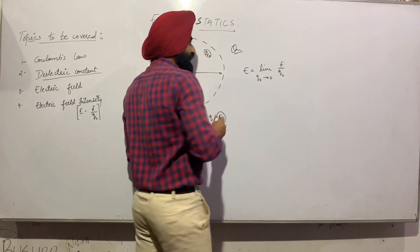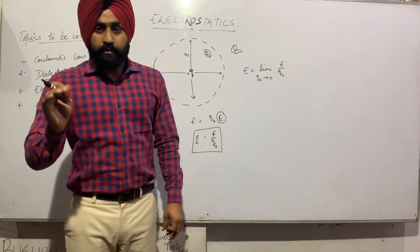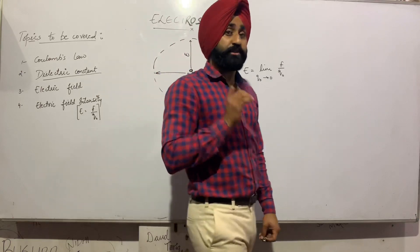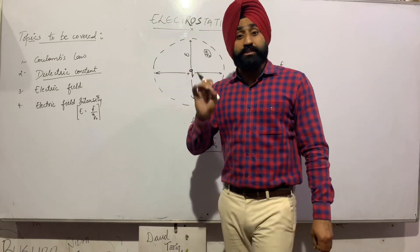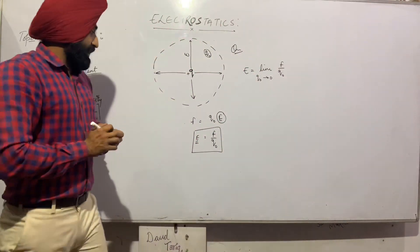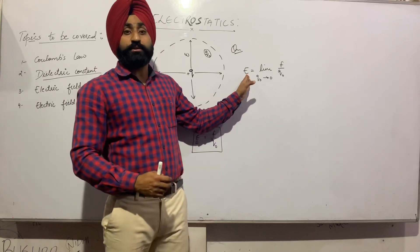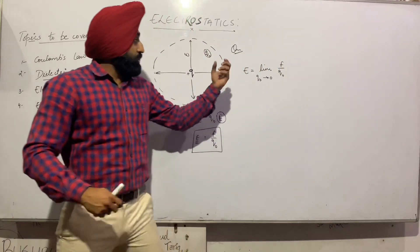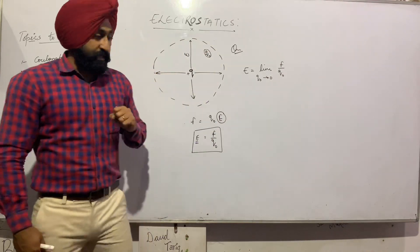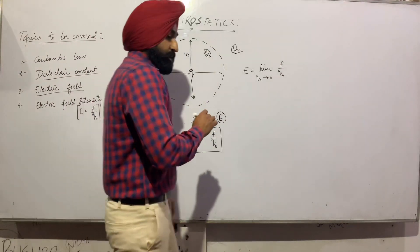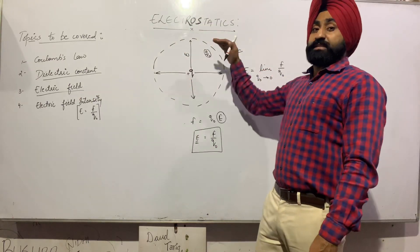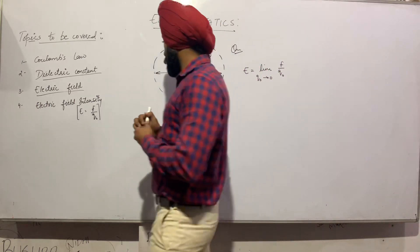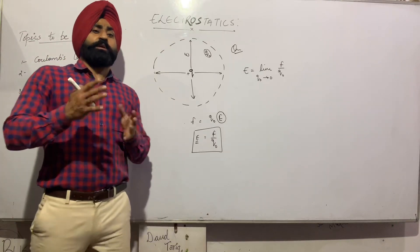The question is: why do we consider the test charge Q-not very, very small? So that it does not disturb the electric field of our source charge Q. We consider the test charge very small because we want it to not disturb the source charge's electric field. So electric field intensity E is clear: it is the force F experienced by Q-not, divided by Q-not. Electric field is a region where a particular test charge can experience a force of attraction or repulsion due to a source charge.